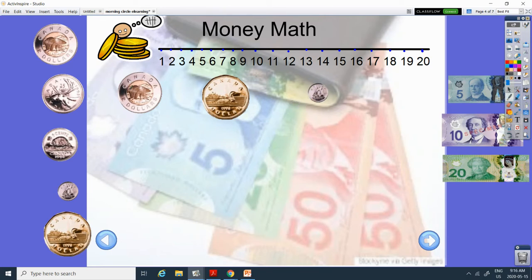Okay, how much is this coin? It's got a polar bear, two colors, called the toonie. It is $2.